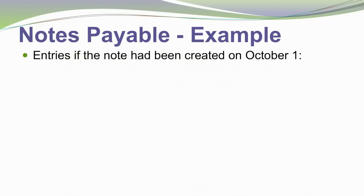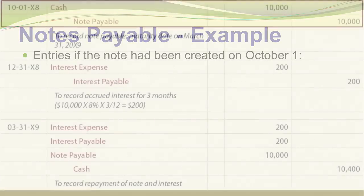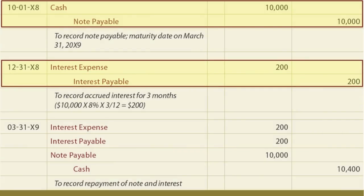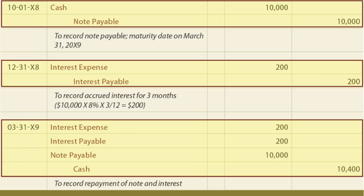Let's revise our note and consider entries if the note were created on October 1. On October 1, we debit cash and credit notes payable $10,000. Assuming a December 31 year-end, October, November, and December go by — three months, half of the six-month life of the note. So $200 of interest accrues: $10,000 × 8% × 3/12 = $200. Since payment isn't due until maturity, we credit interest payable. On March 31 when the note is paid, the $10,400 payment is recorded: $10,000 debit to notes payable, $200 debit to interest payable (accrued from prior year), and $200 debit to interest expense for January through March.